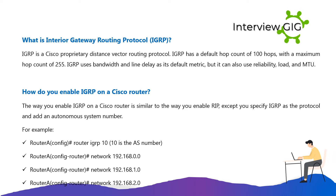What is Interior Gateway Routing Protocol (IGRP)? IGRP is a Cisco proprietary distance vector routing protocol. IGRP has a default hop count of 100 hops with a maximum hop count of 255. IGRP uses bandwidth and line delay as its default metric, but it can also use reliability, load, and MTU. How do you enable IGRP on a Cisco router?